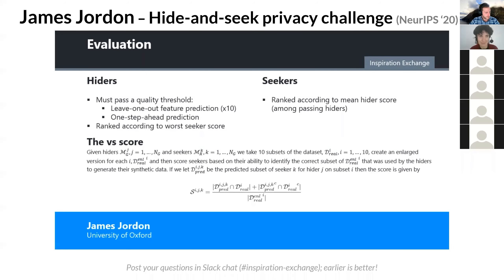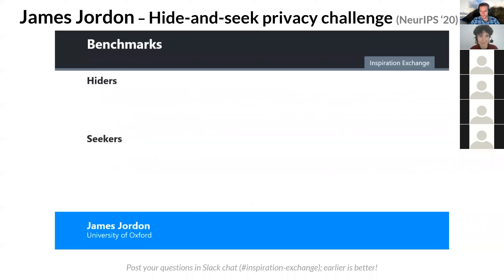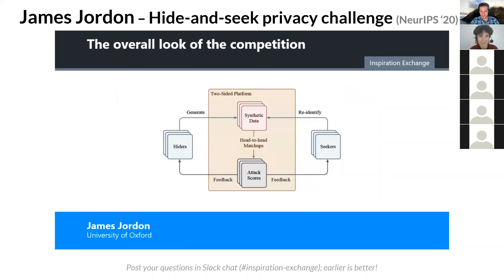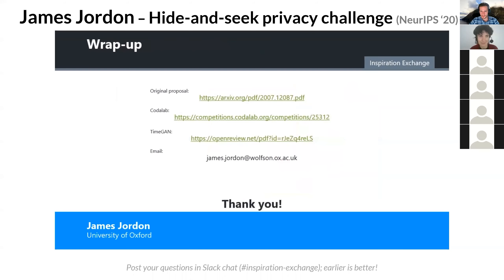While we believe the versus score created a meaningful competition, the evaluation of synthetic data quality was not particularly robust and is an area we hope to improve upon in future iterations by leveraging ideas from Ahmed's presentation. We provided four benchmarks to participants — two for each side. On the hider side: a simple add-noise model that takes the real data and adds Gaussian noise to it, and TimeGAN, a method developed by our group for time series data generation combining generative adversarial networks with autoregressive models. On the seeker side: a simple KNN model selecting the subset of the enlarged data closest to the generated data, and a binary predictor trained to distinguish synthetic data from the enlarged real data. Thank you for listening — please take a look at the proposal paper or the CodeLab website for more information.